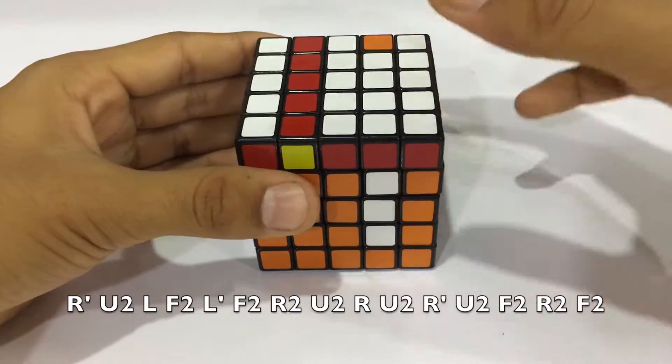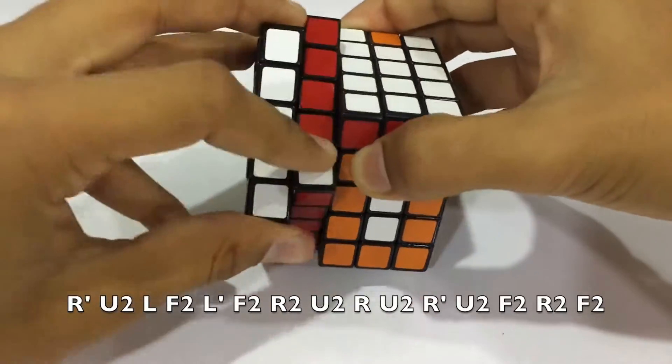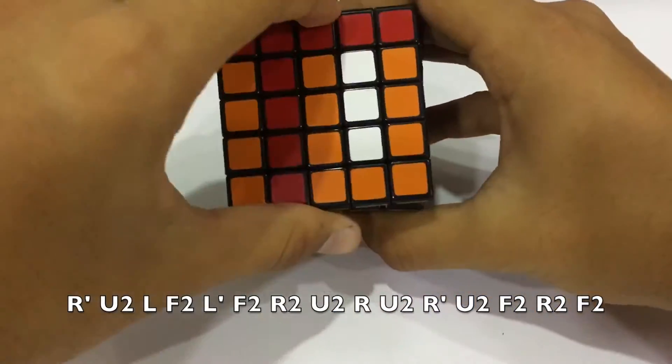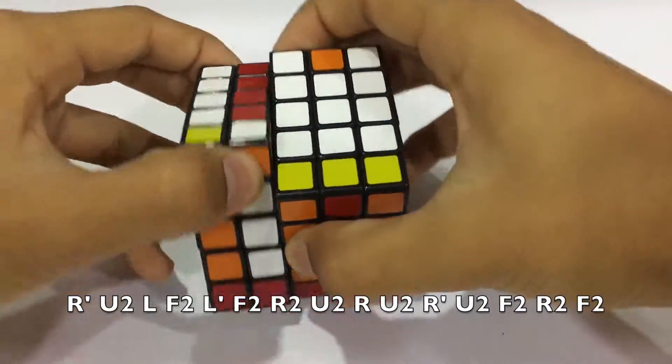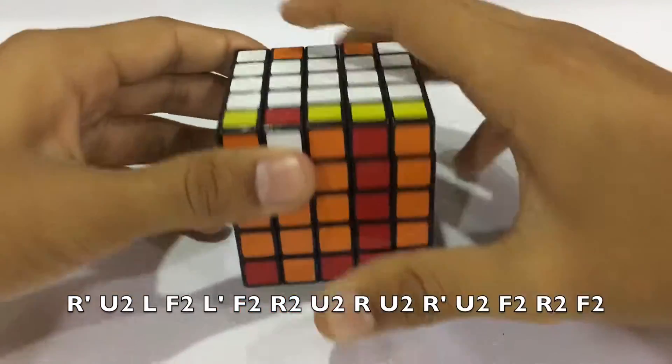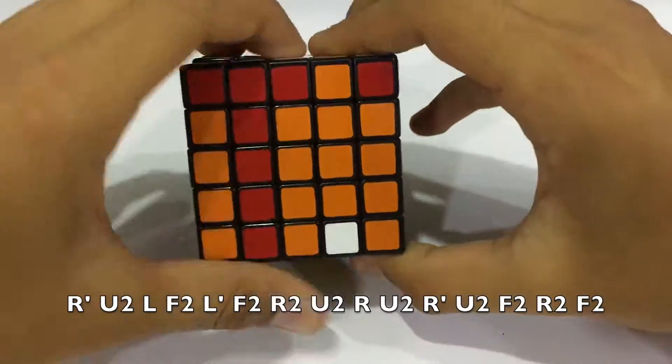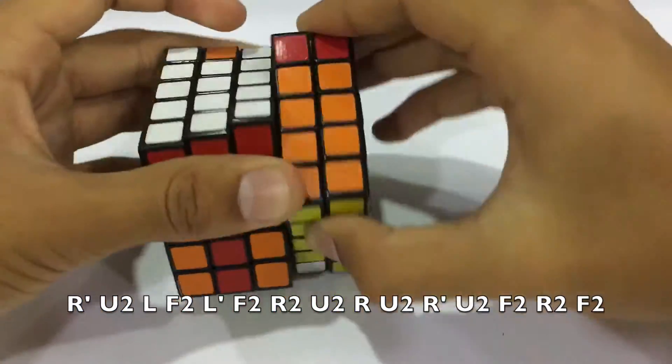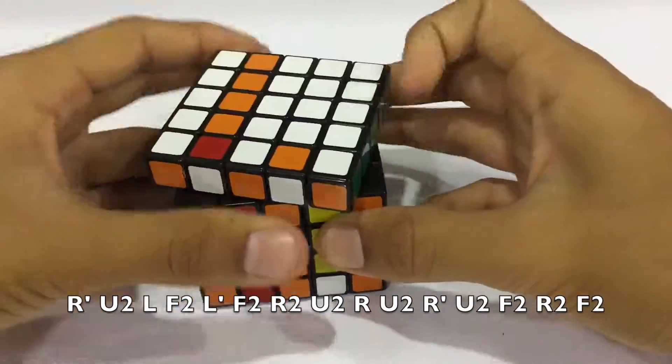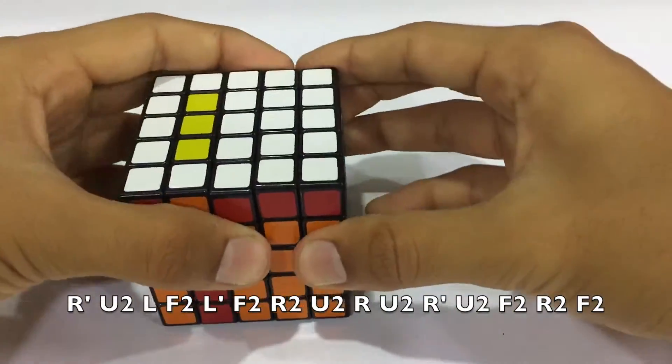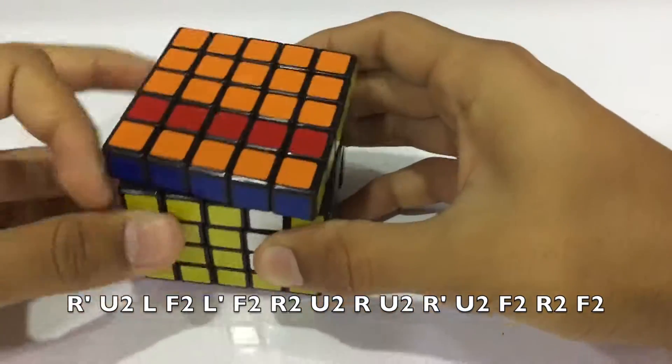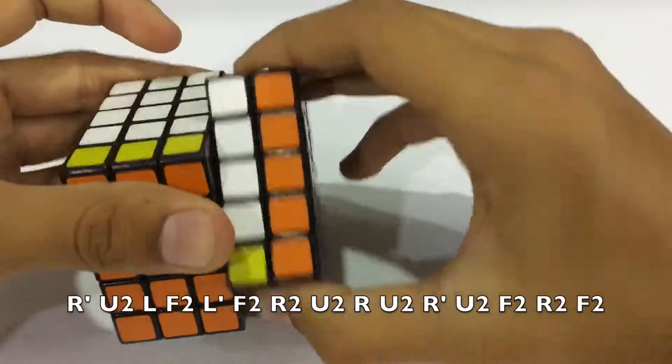Right down, right inverted, then U2, then left, then F2, left inverted, F2, then two times right, U2, right, U2, right inverted, U2, F2, two times right, U2.